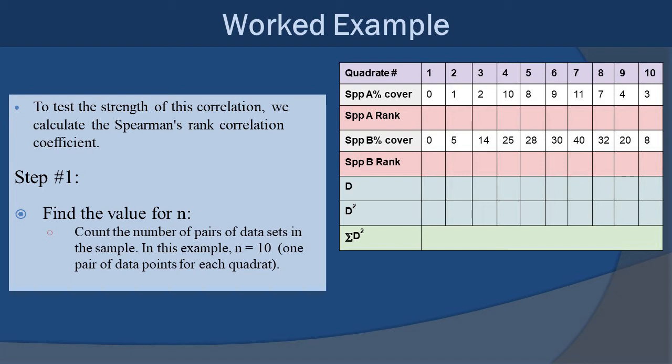So here we are to test that strength of the correlation. We're going to calculate the Spearman rank correlation. Much like when we ran the biodiversity indices earlier in the year, here we are going to use a table to break down and run the information and the numbers for this equation. The first thing we want to do is find the value for n. Now, remember n is the number of pairs. Well, in this particular instance, we have 10 quadrats with two variables each, and that's the pairs. So that would be an n of 10, one pair per quadrat.